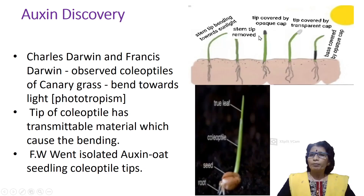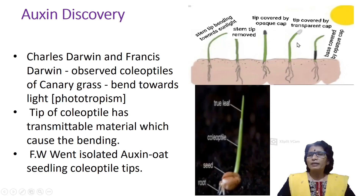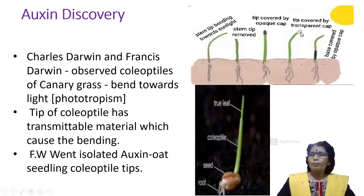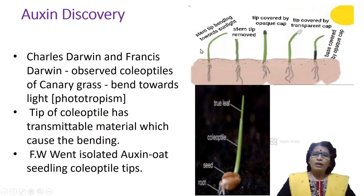In the third experiment, the coleoptile tip was covered by an opaque cap — sunlight could not pass through, so there was no bending. In the fourth experiment, a transparent cap was used — sunlight could pass through, so bending towards sunlight occurred. In the fifth experiment, only the base was covered by an opaque cap, and bending was still observed, confirming the transmittable material is present at the tip only, not at the base.